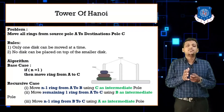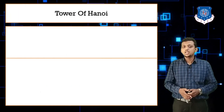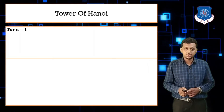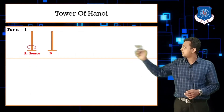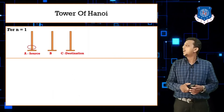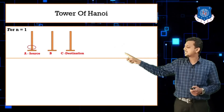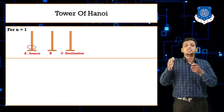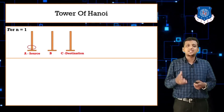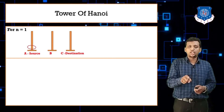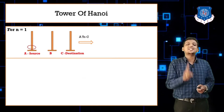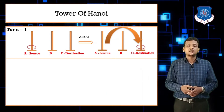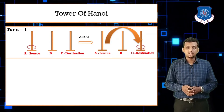Let's understand with examples. For n equals one: pole A is the source, pole B is the intermediate, pole C is the destination. Since there is only one ring, you can directly move it from A to C in a single step. The ring reaches its destination — this is the base case.